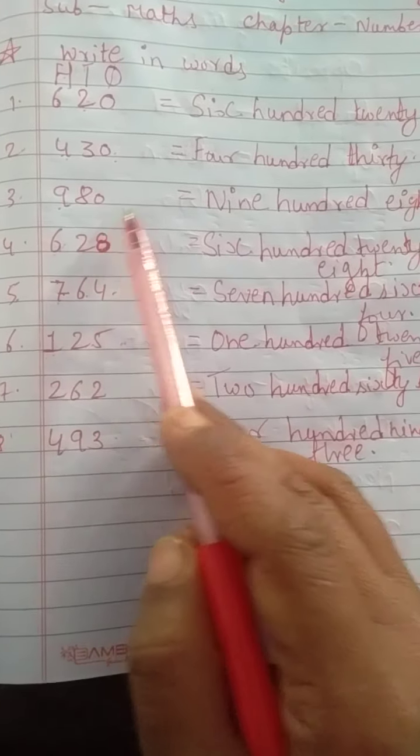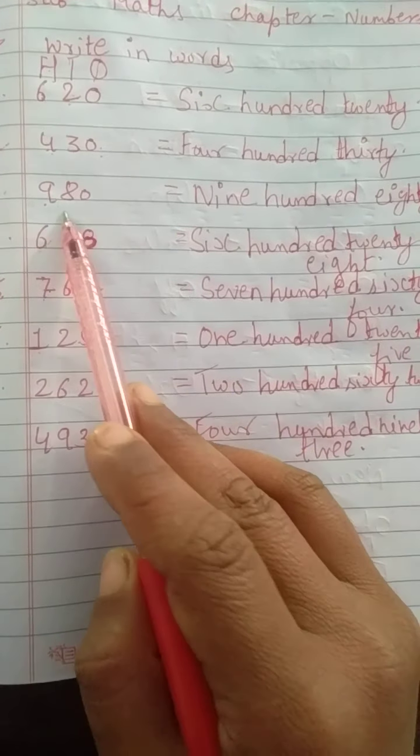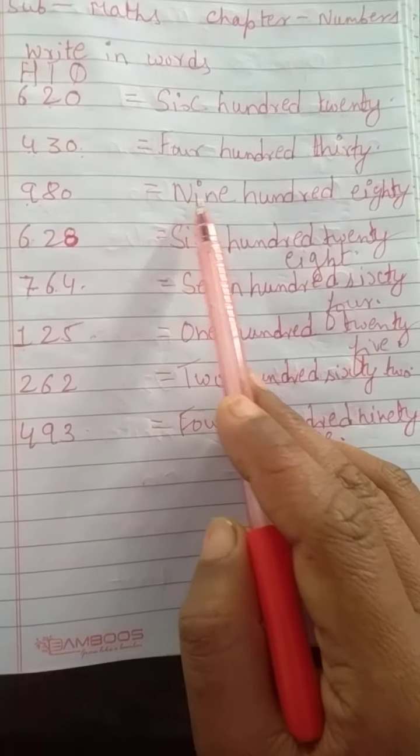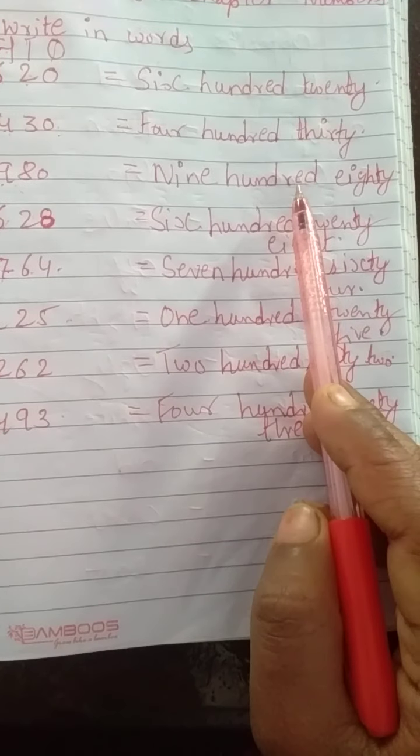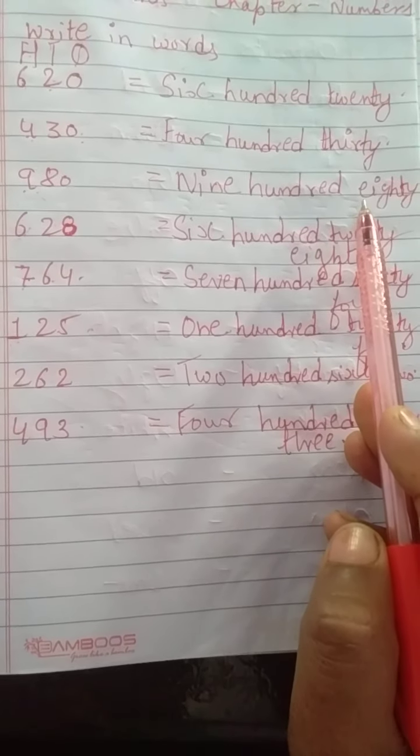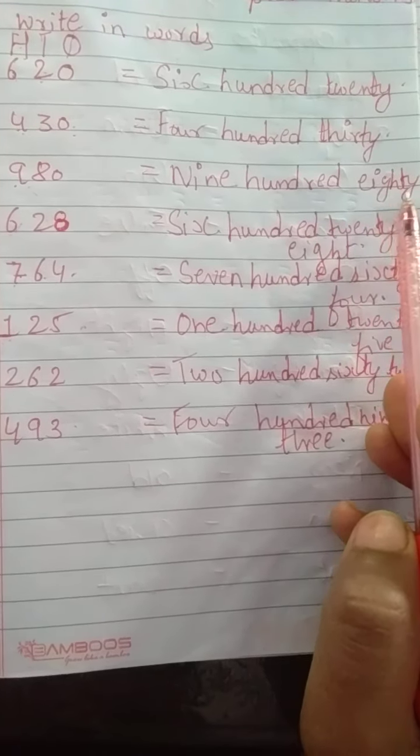Next is 980. So, we have to revise once again. 980. N-I-N-E 9 H-U-N-D-R-E-D 100 and the spelling of 80 is E-I-G-H-T-Y.